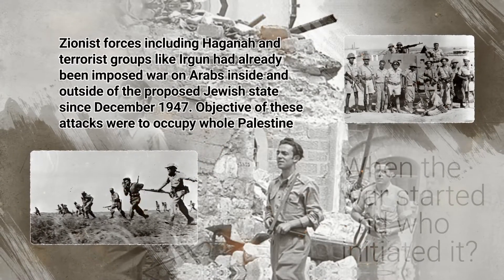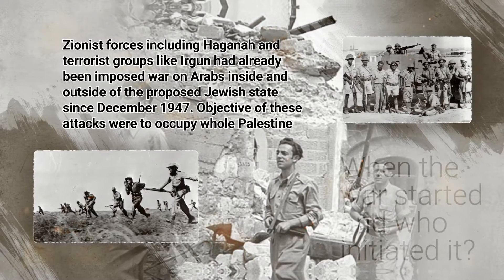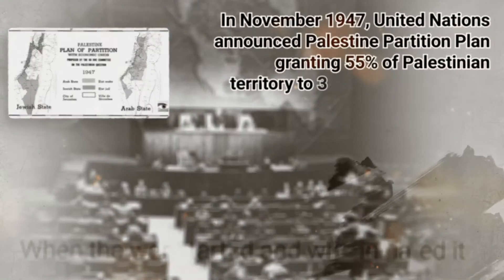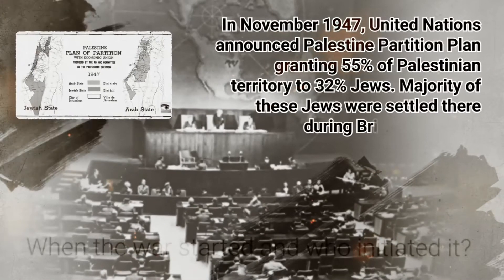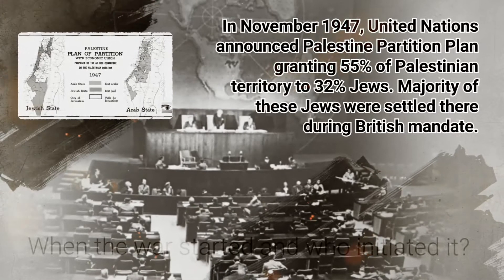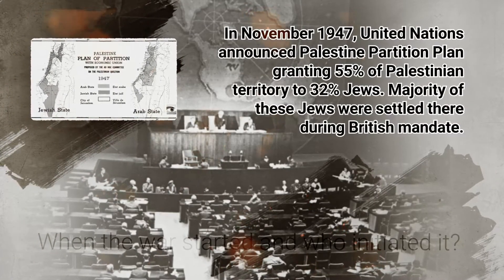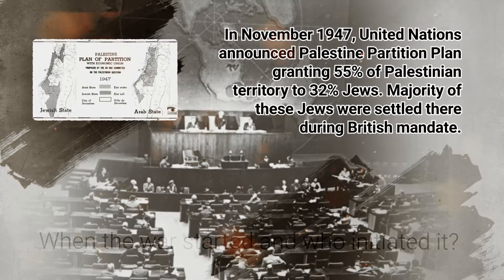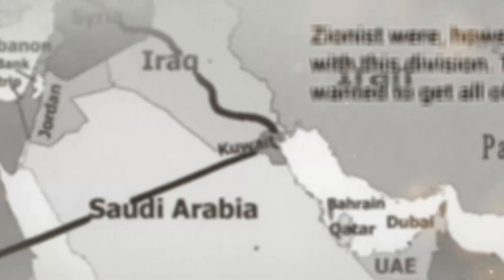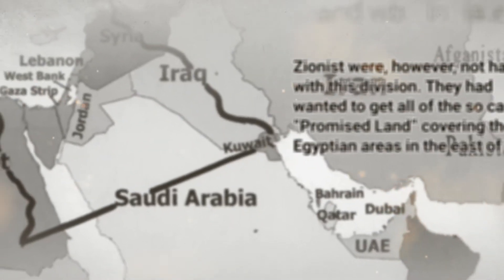The objective of these attacks was to occupy the whole of Palestine. In November 1947, the United Nations announced the Palestine Partition Plan, granting 55% of Palestinian territory to Jews who made up 32% of the population. The majority of these Jews had settled there during the British mandate. Zionists, however, were not happy with this division.